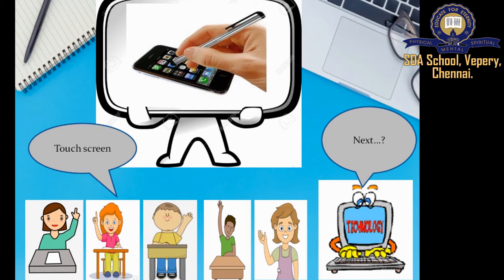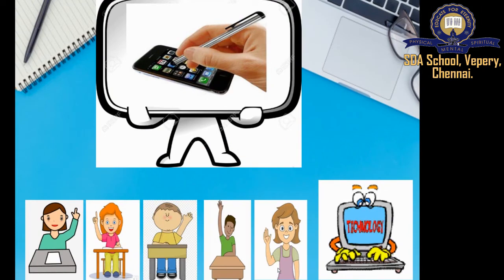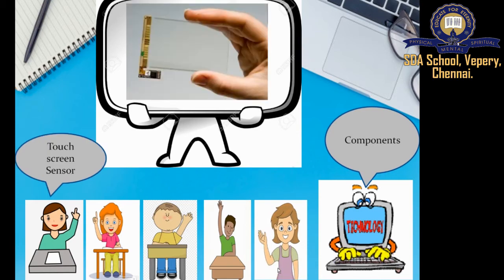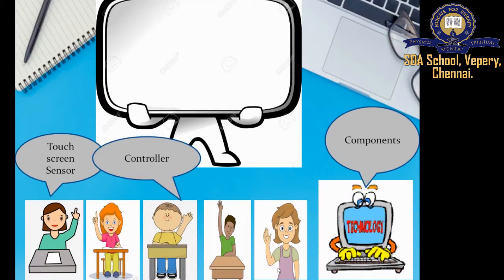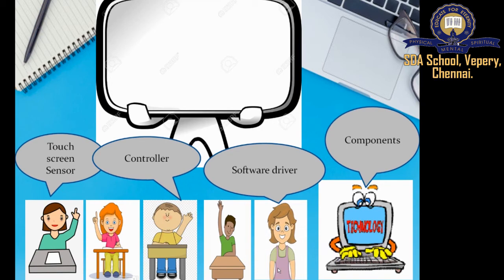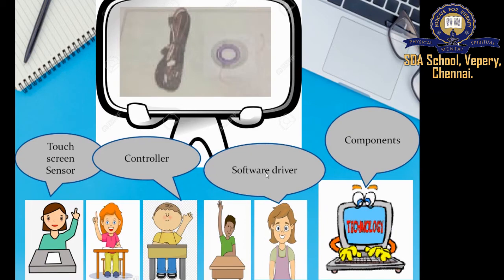This is a touch screen — it is an input device that you operate using a finger or stylus. Its three components are: the touch screen sensor, which is a clear glass panel placed over the display screen; the controller, which is a small PC card that connects the touch screen sensor to the PC; and the software driver, which is a software update that enables the device.